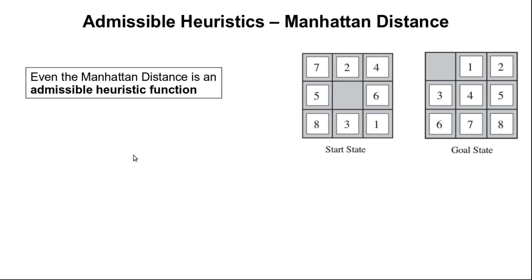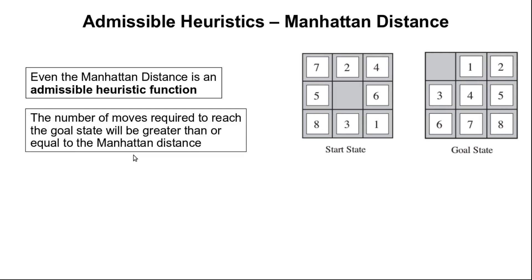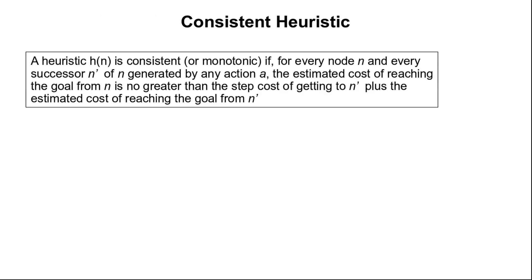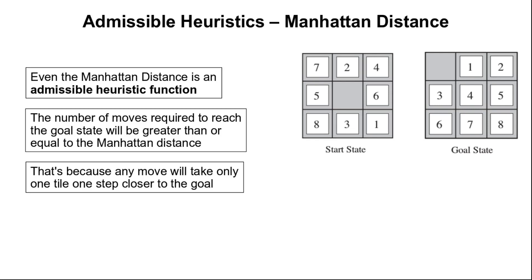The Manhattan distance is also an admissible heuristic because the number of moves required to reach the goal state will be greater than or equal to the Manhattan distance. Any move will take only one tile one step closer to the goal, so the Manhattan distance never overestimates.